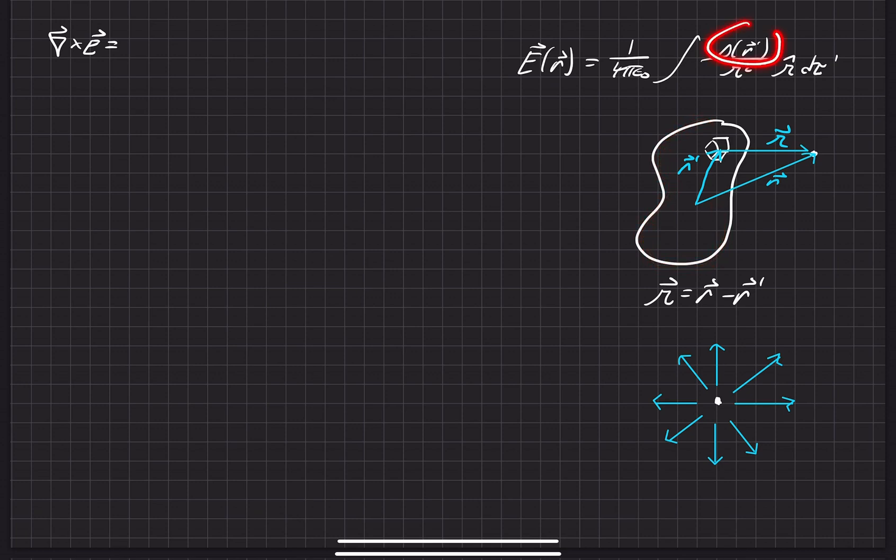This has a volume charge density of ρ, which depends on the distance from the coordinate center, which we defined as some point here in the center. It could be anywhere, but it depends on the distance from the origin center all the way to some distance r' from the origin center.